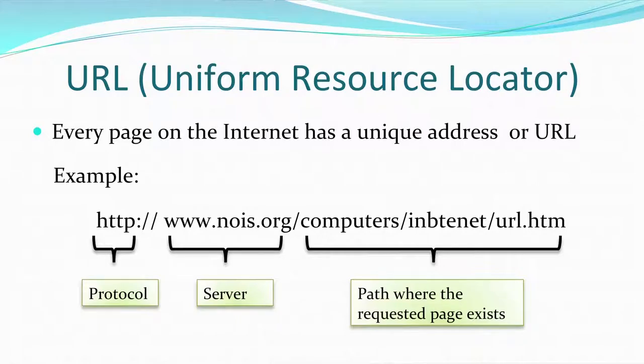The third part of the URL is the path on the server where the requested page is saved. For example, the URL 'url.htm' is stored in the folder 'computers', in the subfolder 'inbtenet', and the file name is 'url.htm'. So the complete URL consists of the protocol, the server, and the complete path along with the file name. Every web page that you request will have these three components in its address — the protocol, the server name, and the complete path with the file name.